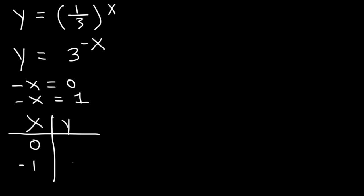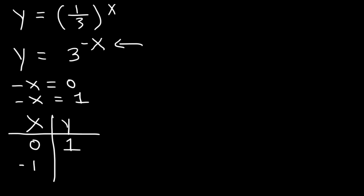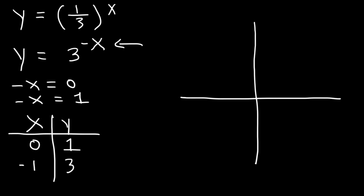If we plug in zero, 3^(-0) is simply one. If we plug in negative one, 3^(-(-1)) equals 3^1 which is equal to three. The horizontal asymptote is still y equals zero, meaning it's the x-axis. Plotting these, we have the point (0, 1) as the y-intercept and (-1, 3). The graph is going to start from the x-axis and follow those two points.